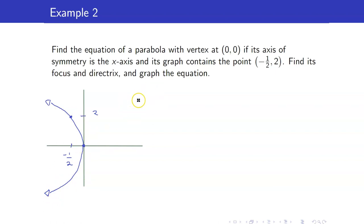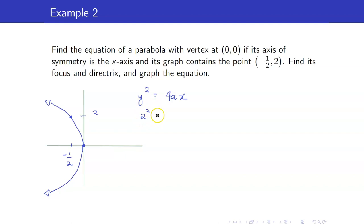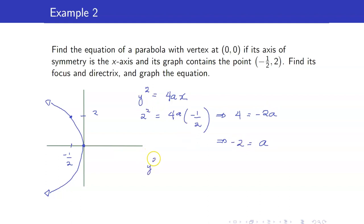Which variable is raised to 2? So our equation is y squared equals 4ax, and we would expect a to be negative. How do we solve for a? We just plug in this point. The point (negative 1 half, 2) lies on the graph, so it satisfies the equation. Our y here is 2, so this is 2 squared equals 4a times negative 1 half. Hence, our a is equal to negative 2.